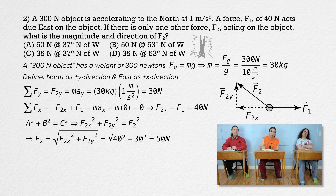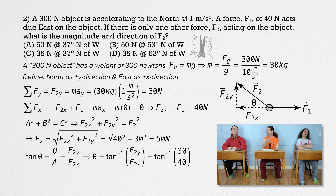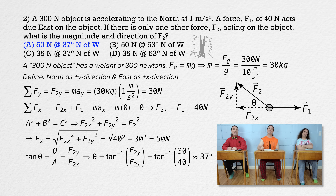For the angle theta of the component vector right triangle, using tangent theta equals opposite over adjacent — force two in the y direction divided by force two in the x direction — theta equals the inverse tangent of 30 over 40. Since it's a 3-4-5 triangle, that angle is 37 degrees without even needing a calculator. That means force two is 50 newtons at an angle of 37 degrees north of west, which is choice A.